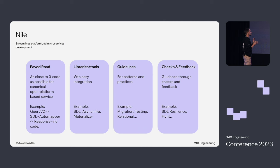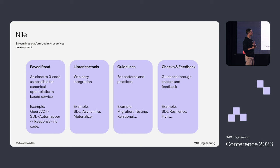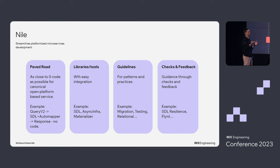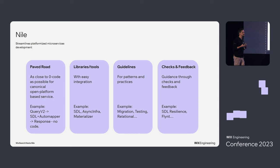Then there are questions not of what but how — we provide guidelines for migration, testing, relational patterns. And one I really like is checks and feedback: when you work on your service, expand your domain, or change a system, it talks to you. It tells you 'maybe it's not a great idea' or 'in addition, you need to go do that.' This is how I think about Nile.